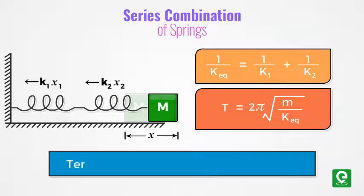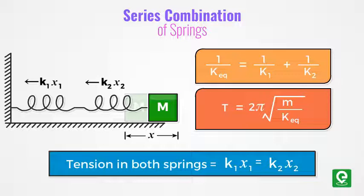In series combination, the tension is same in all the springs. If the stiffness k is same, then deformation in both the springs will also be same.